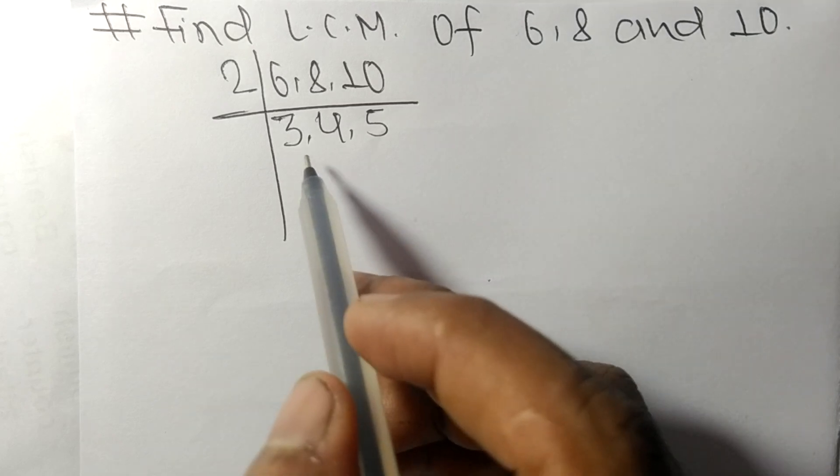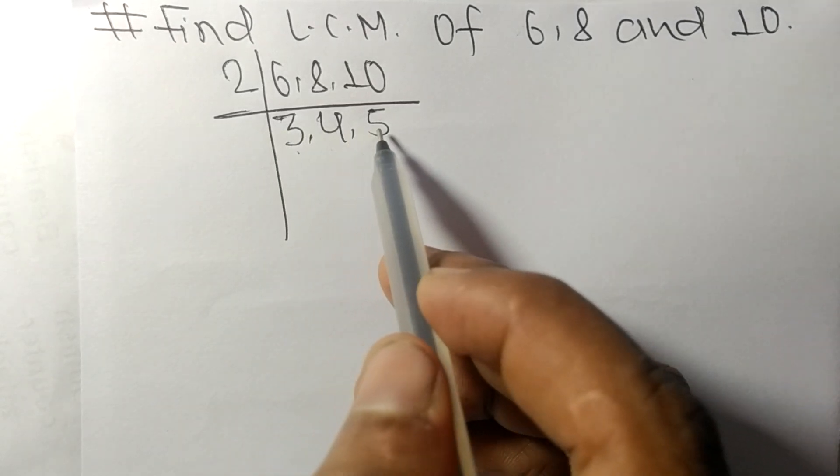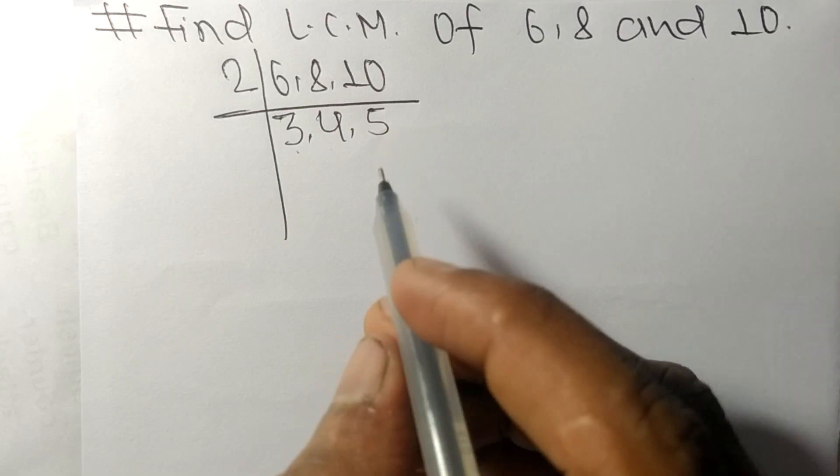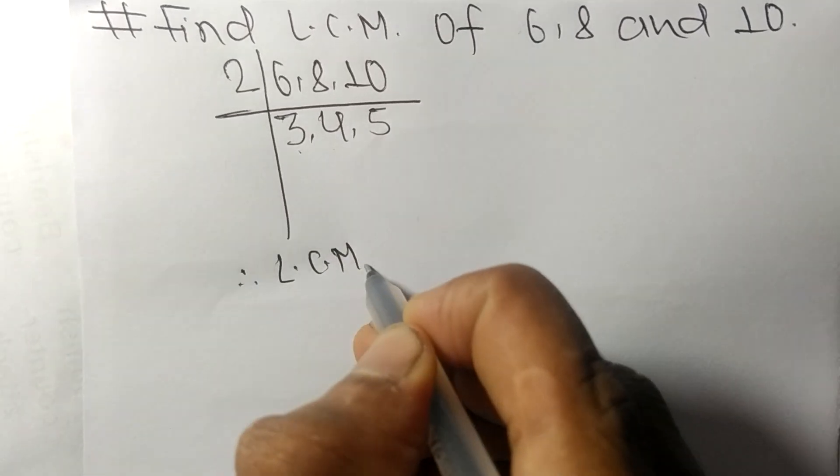So now we got 3, 4, and 5, which are not exactly divisible by the same number. Therefore, its LCM is...